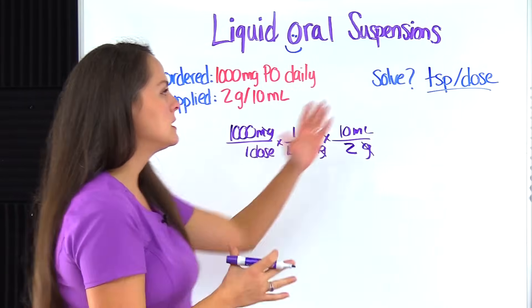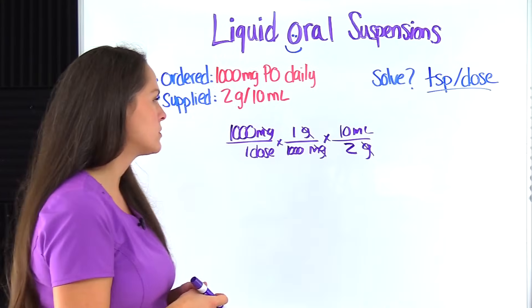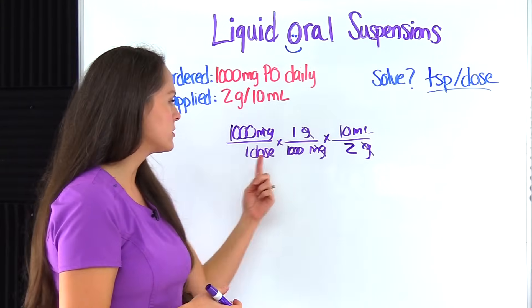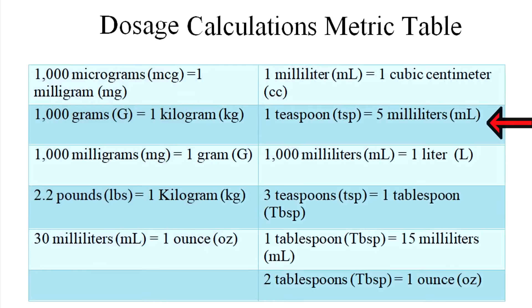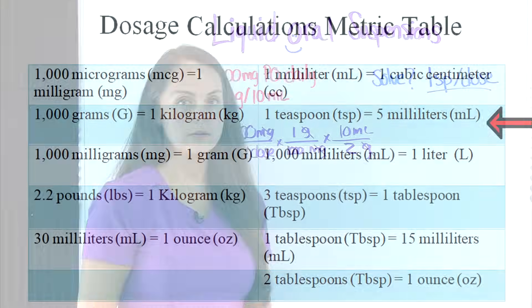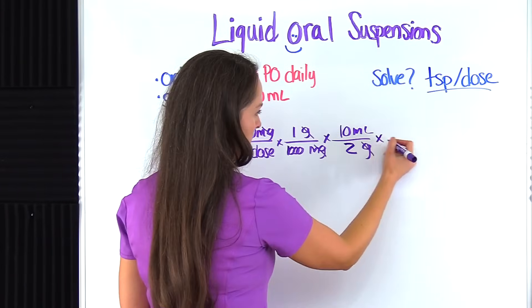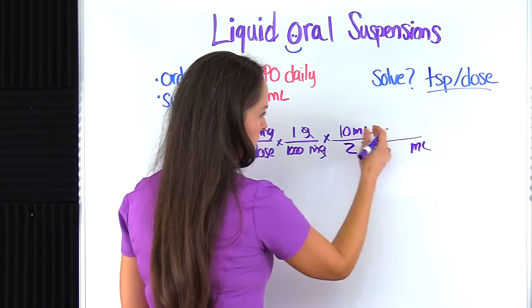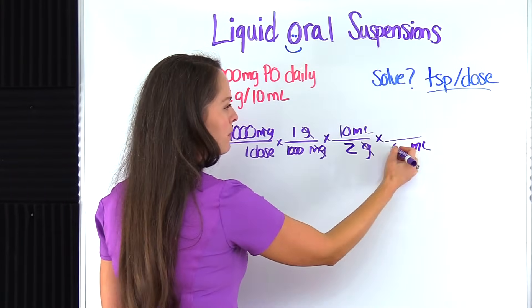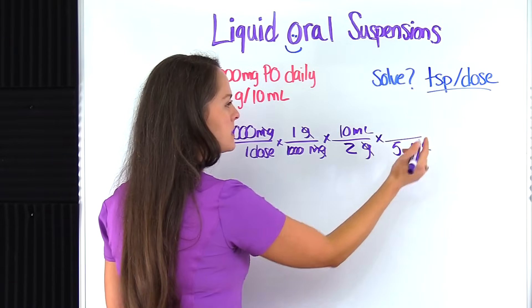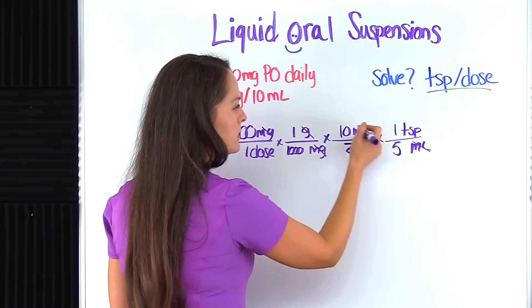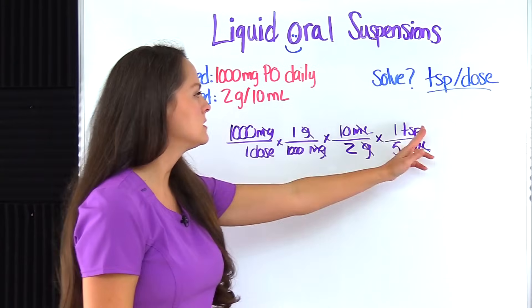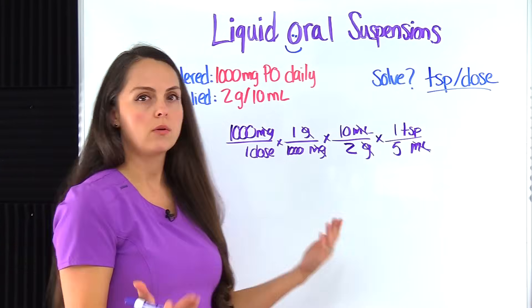Remember, my goal is to get to teaspoons per dose. So right now I'm in milliliters per dose. Well, whenever I think about the metric table, I know I can go from milliliters to teaspoons. So we know from the metric table, let's just pull this over here, this milliliters. We know that there are 5 milliliters in one teaspoon. That cancels out milliliters and we have teaspoons per dose where we want to go.